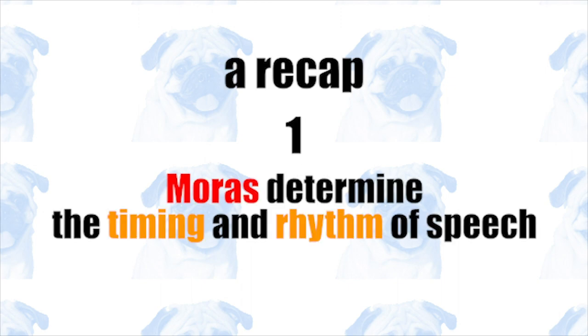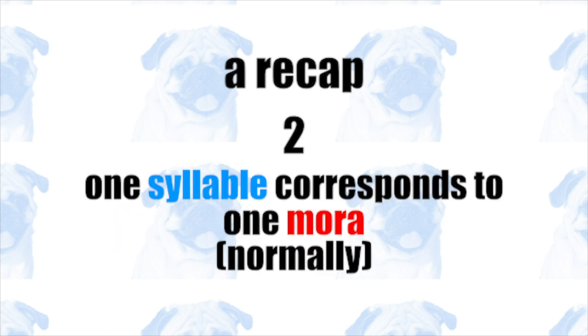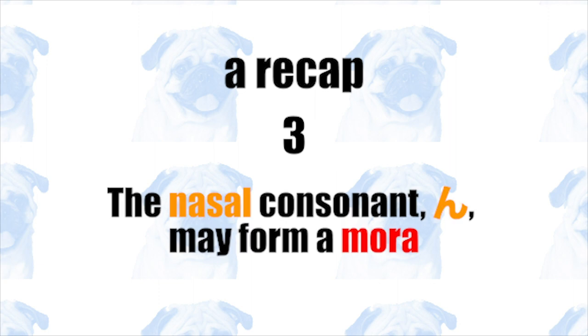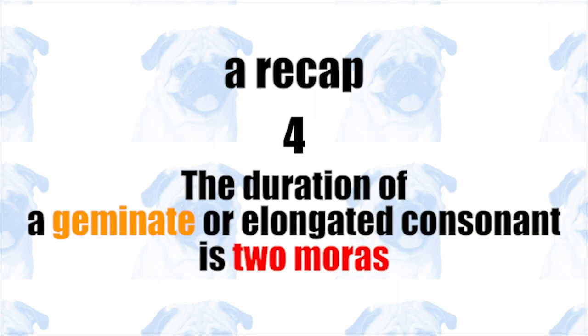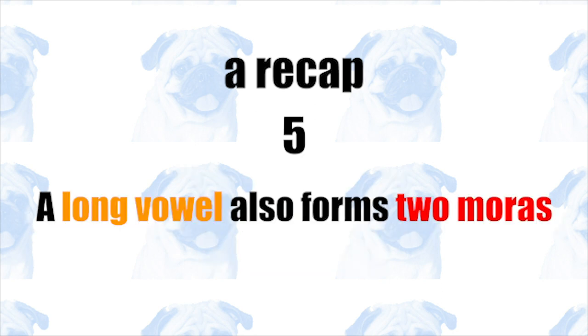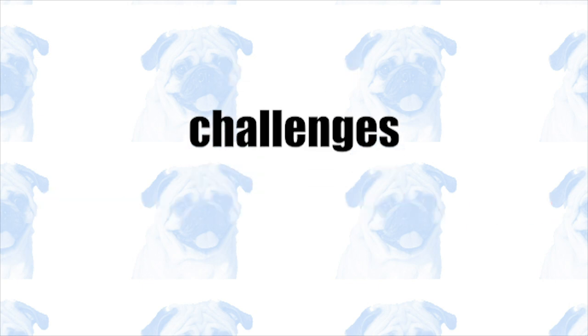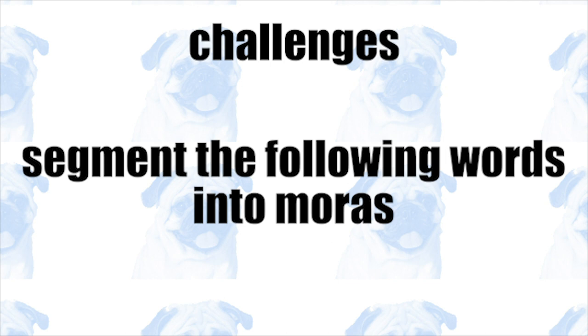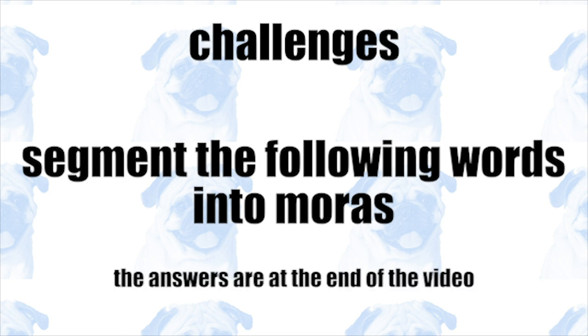Let's have a brief recap of what you learned in this video. 1. Moras determine the timing and rhythm of speech. 2. Normally, one syllable corresponds to one mora. 3. The nasal consonant n may form a mora on its own. 4. The duration of a geminate or elongated consonant is two moras. 5. A long vowel also forms two moras. Before we end this video, here are some challenges for you — try segmenting the following words into moras. The answers are at the end of this video.